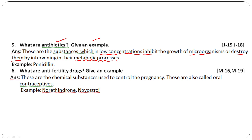What are anti-fertility drugs? Give an example. These are chemical substances used to control unwanted pregnancy. These are also called oral contraceptives. Examples are norethindrone and nogestrol.